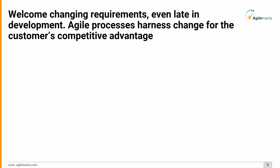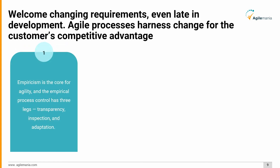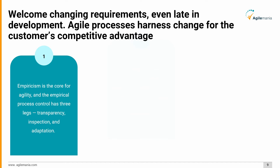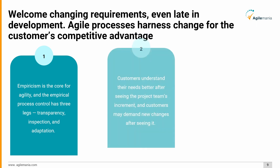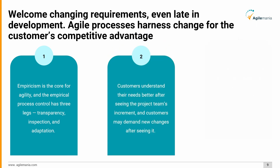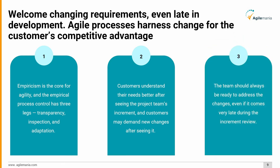The second principle in detail: welcome changing requirements, even late in development. Agile processes harness change for the customer's competitive advantage. Empiricism is the core of agility, and the empirical process control has three legs: transparency, inspection, and adaptation. Customers understand their needs better after seeing the team's increment and may demand new changes. The team should always be ready to address changes, even if they come very late during the increment review.